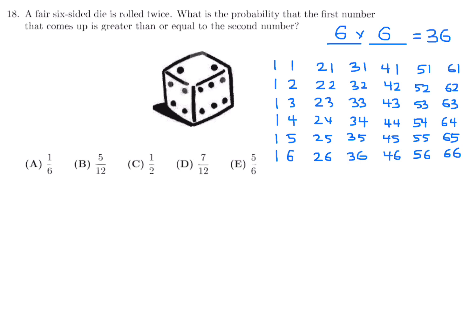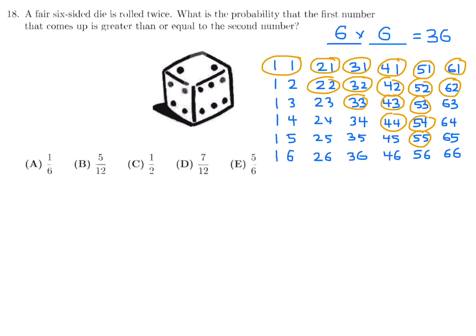Circling the outcomes where the first die ≥ the second die: 1 outcome for first=1, 2 for first=2, 3 for first=3, 4 for first=4, 5 for first=5, 6 for first=6 — totaling 21 favorable outcomes. Probability = 21/36 = 7/12. Number 18, answer D.